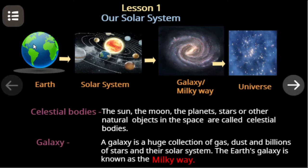Let us go through important points of the lesson on our solar system. The sun, the moon, the planets, stars, or other natural objects in space are called celestial bodies.